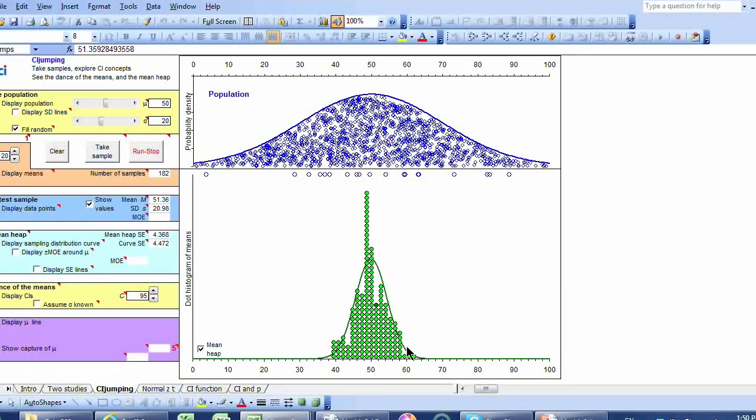If I had larger samples, this normal distribution would be narrower or wider. It would be narrower, taller and narrower, wouldn't it? Because my dance of the means would be less frenetic. All the means would be more tightly bunched either side of the population mean.